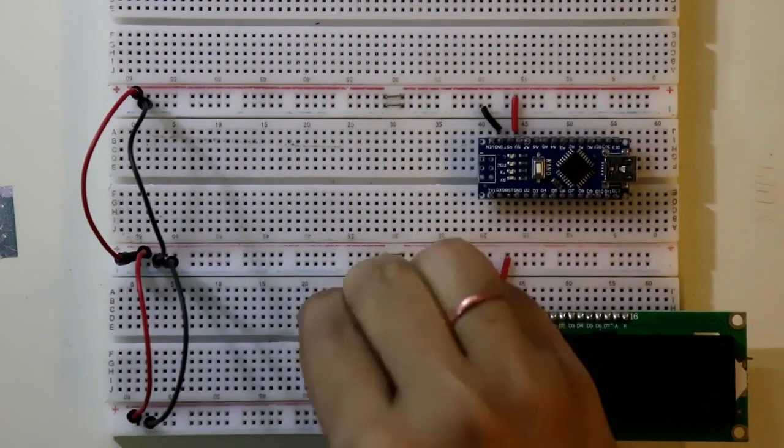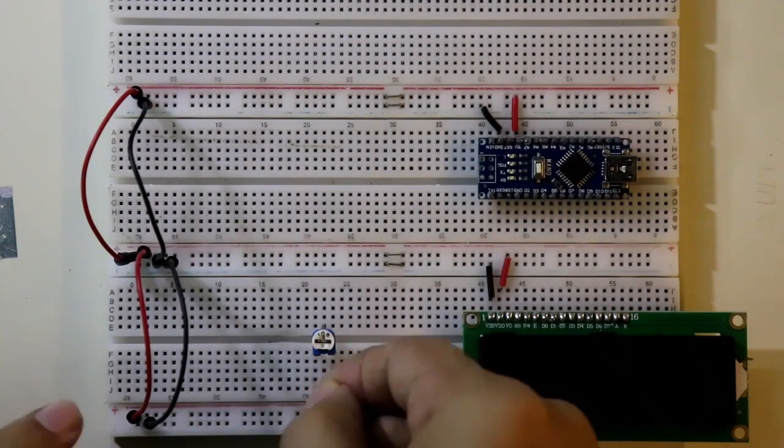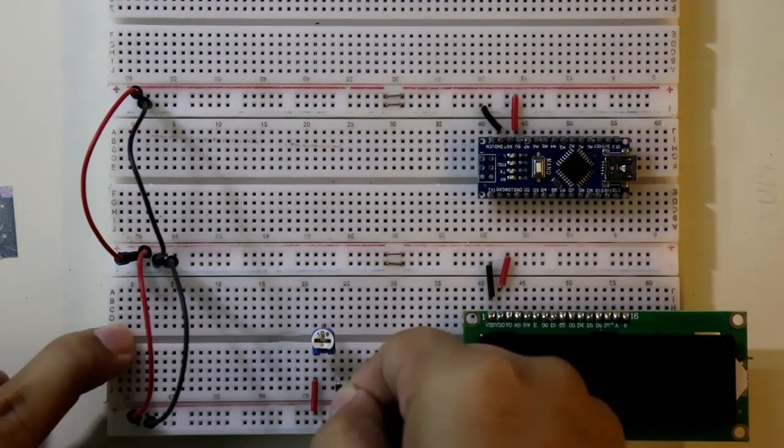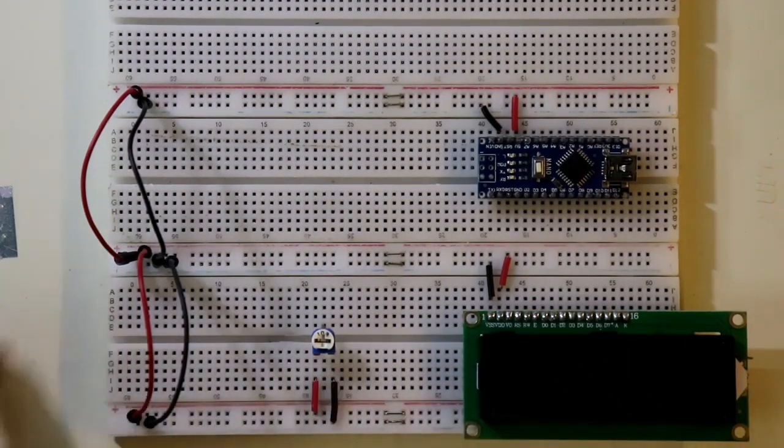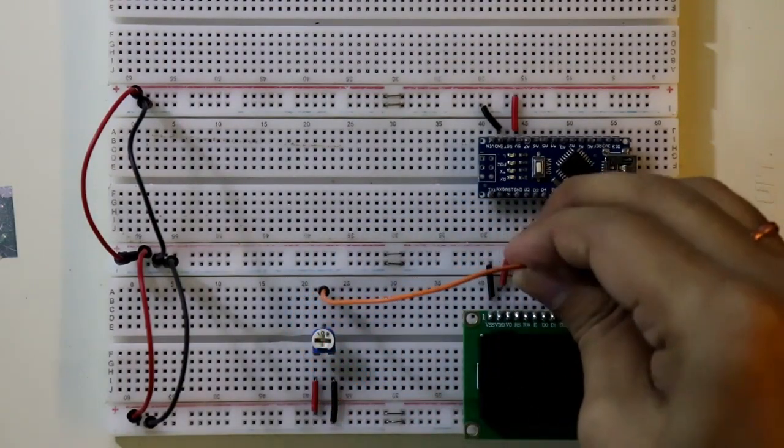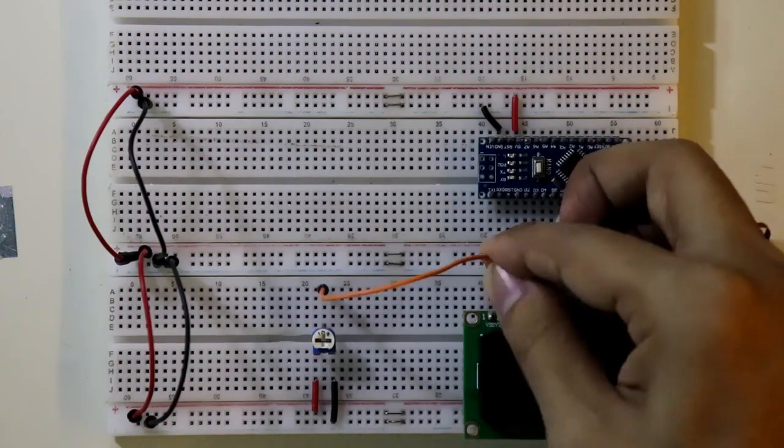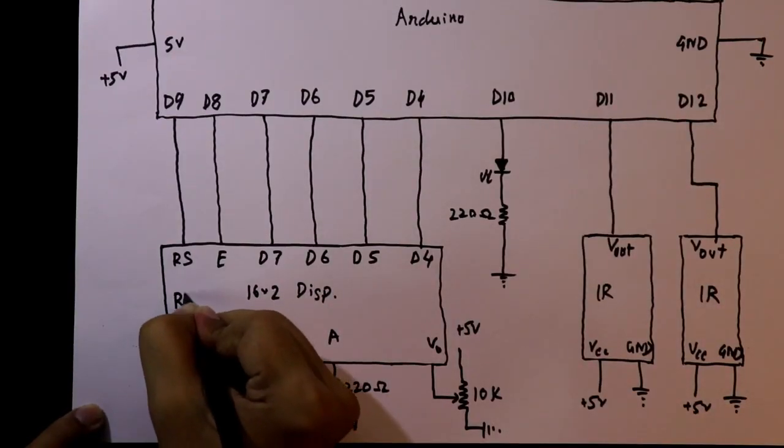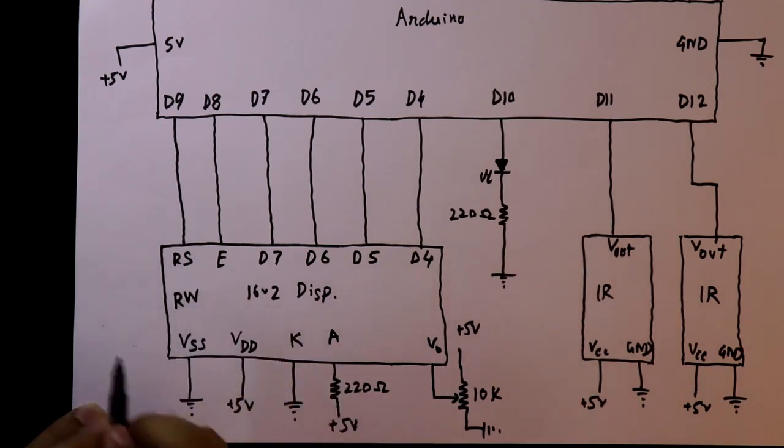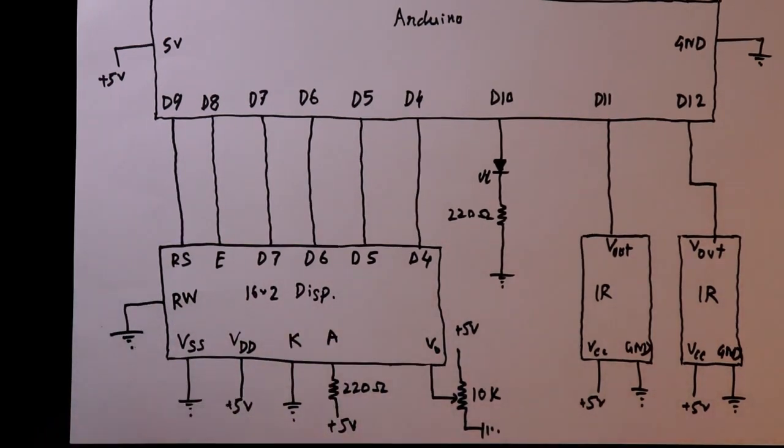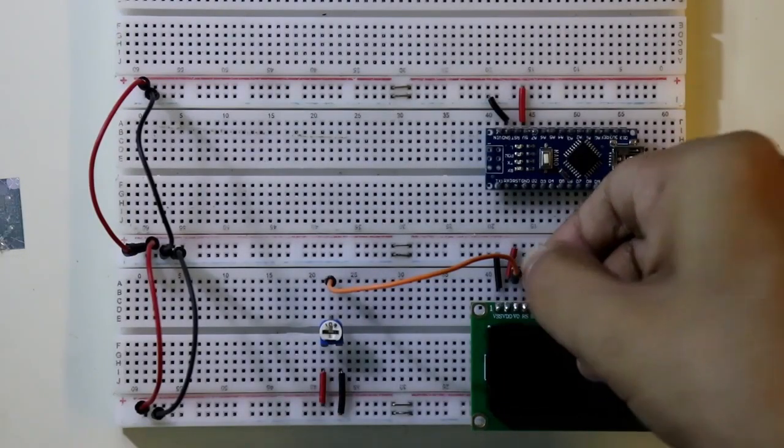Here is the potentiometer. One pin is connected to positive rail, another one is connected to the ground. The middle pin of the potentiometer is connected to the V0 pin of display. The RW pin of the display is connected to the ground.